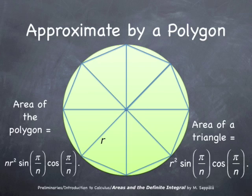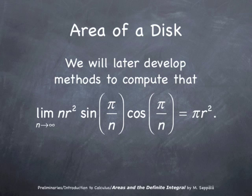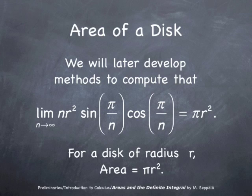This is how the area of a disk can be computed. We will later develop methods to compute that the limit as n goes to infinity of n times r-squared times sine pi over n times cosine pi over n is pi times r-squared. And this means that the area of a disk of radius r is simply pi times r-squared, a familiar formula.